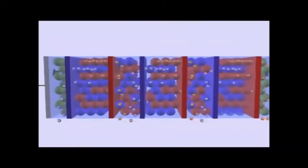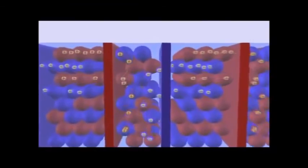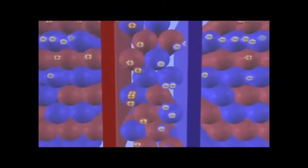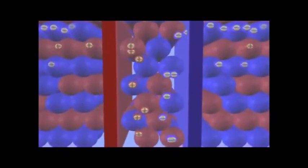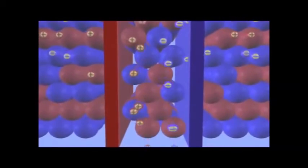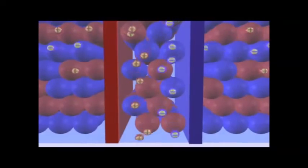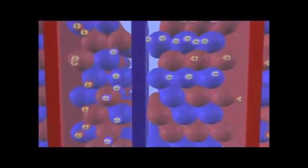Ions migrate and accumulate in the concentrating compartments, where they are washed away into the reject stream. The water leaving this compartment contains a concentration of ions approximately 10 to 20 times higher than the original feed water. This water may be drained, recycled, or reclaimed for further treatment.